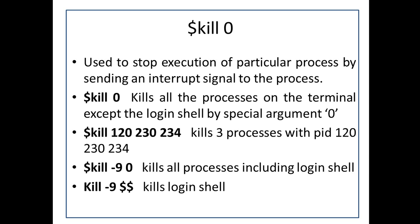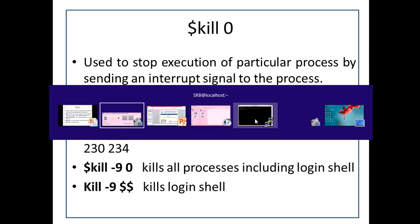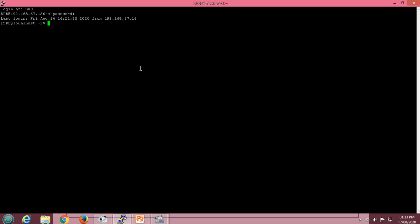kill 0 will kill all the processes on the terminal except the login shell using the special argument 0. kill 120 230 234 kills specific processes by PID. kill -9 0 will kill all processes including the login shell. kill -9 $$ will kill the current login shell.